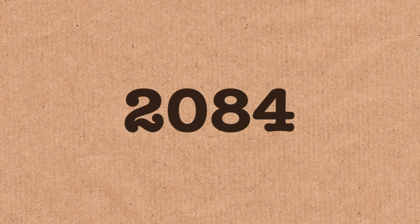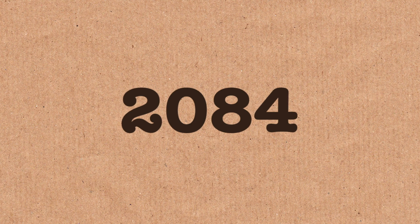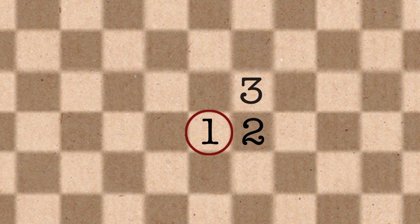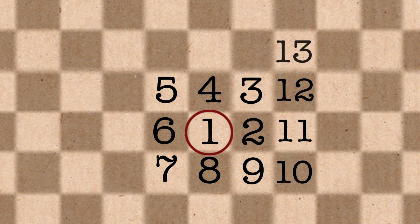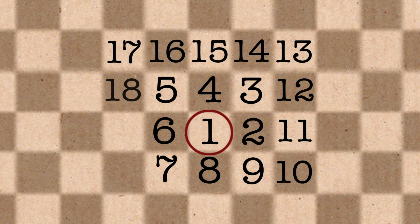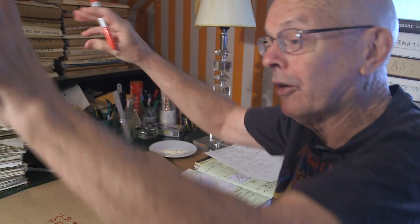I wanted to tell you about the number 2084. It arises at the end of a little story. This particular one came about on a chessboard, but this is a really big chessboard — an infinite board. So I'm going to number the squares. I'll pick any square and number it one, and now we work in a spiral around it. It's called a square spiral, and we go around and around until we've filled up the whole board.